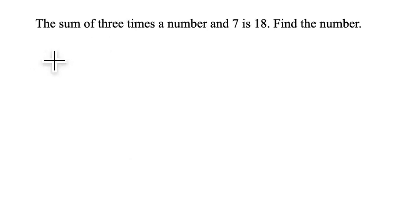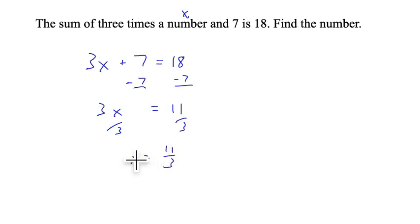The previous question we might have been able to solve easier without an equation. Let's try one that's probably easier with an equation. The sum of 3 times a number and 7 is 18. Find the number. We have 3 times a number—the number will be x. So the sum of 3 times a number and 7, that's what we're adding. So 3 times a number and 7 is 18, so equals 18. We'll solve that for x. Now we get a fraction here, so we'll probably want to double check this. Our number is 11 thirds.